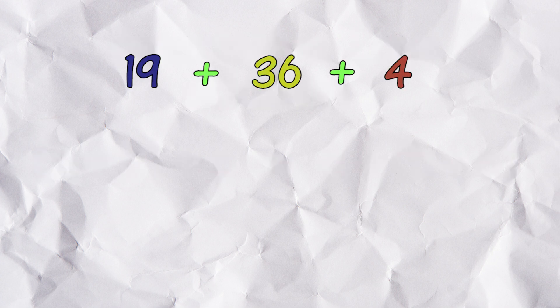Uses: Sometimes it is easier to add or multiply in a different order. Example, what is 19 plus 36 plus 4? Let's group the 36 and 4 as they make 40.